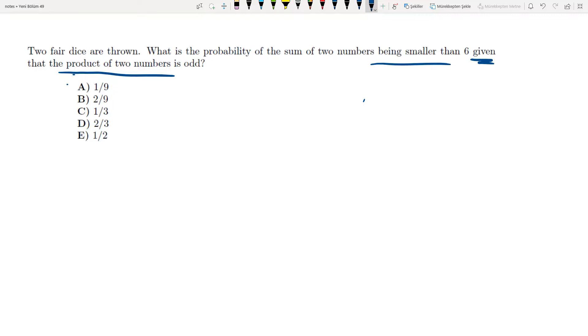Now when I multiply two numbers, two outcomes, the product is odd, which means both numbers are odd.